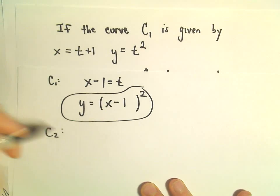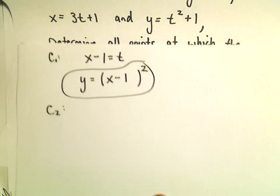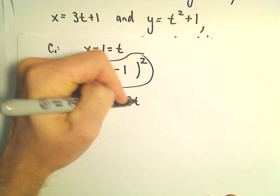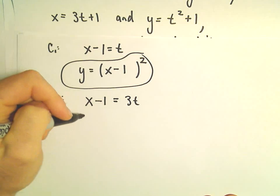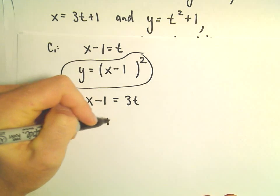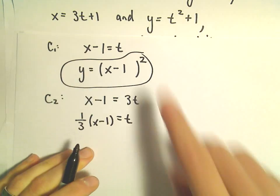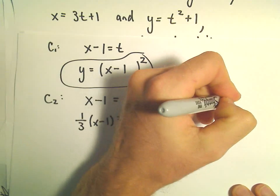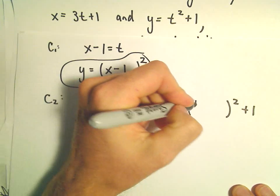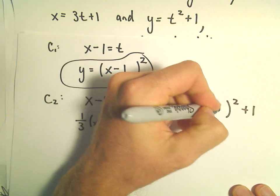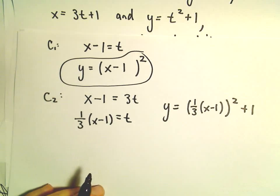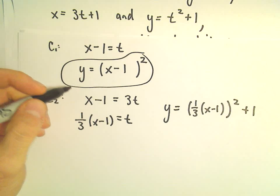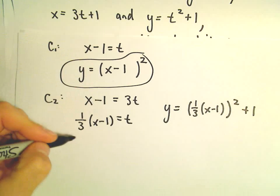We can do the same thing with the second curve. So let's see here. I guess we would have X minus 1 equals 3T if I subtract 1. And then we can multiply both sides by 1 third. When we plug that into the other part, we'll have Y equals, well, T squared plus 1. So that's going to be 1 third times X minus 1 quantity squared. All right, so maybe some kind of tedious equations, but that's okay.